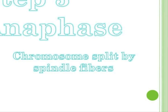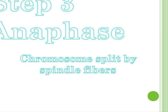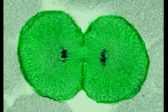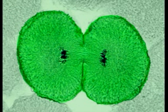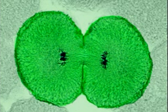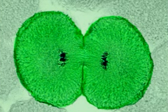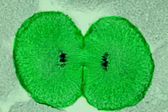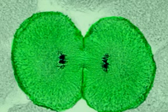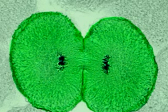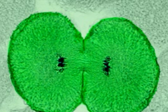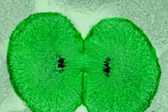In anaphase, the centromeres that join the sister chromatids split, and the chromatids become individual chromosomes. Chromosomes move until they have separated into two groups near the poles of the spindle. Anaphase ends when the chromosomes stop moving.